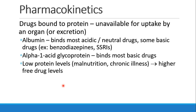Many drugs in the bloodstream are bound to protein. Protein-bound drugs cannot be taken up by an organ or excreted by the kidneys. The primary binding protein is albumin, which binds most acidic, neutral, and some basic drugs. The second most common is alpha-1-acid glycoprotein, which binds most basic drugs. If a patient has very low protein levels — due to malnutrition or chronic illness — they have less protein available to bind drug, resulting in more free drug in circulation, meaning more activity and a greater effect from any given drug administered.